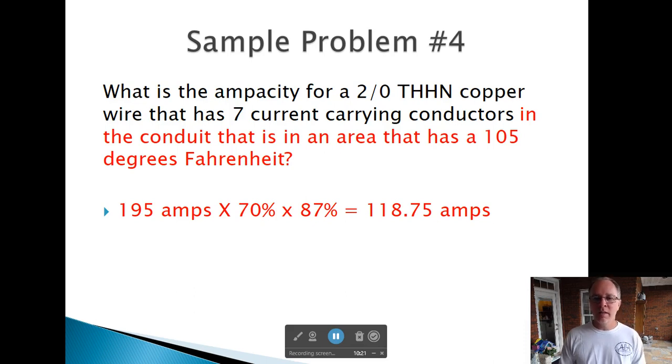So we've got 0.87, which is the multiplier for a 105 degree ambient temperature. Now that 195 amp 2-Aught wire is only good for 118, 119 amps. So we don't want to get it as hot. Amperage produces heat. It's going to produce more heat at 195 amps than it will at 118. But we're keeping the amperage lower because of the ambient temperature and other current-carrying conductors in there.